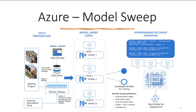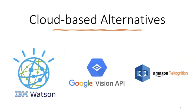Azure is not the only option — each big company, starting from IBM Watson, Google Computer Vision, or Amazon Rekognition, gives almost the same functionality and service. These cloud-based models are really good if you want to use them later for deployment.